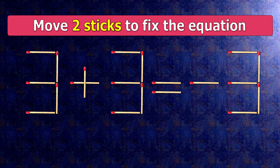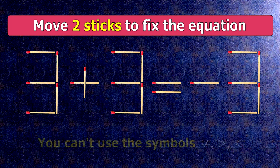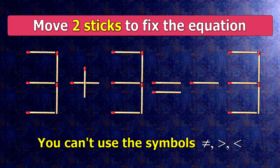We have the equality 3 plus 3 equals minus 3. Our equality is wrong. We need to move two matches to make our equality correct.